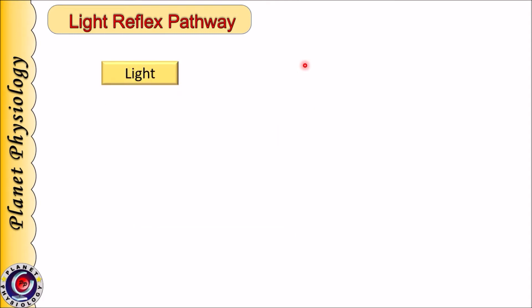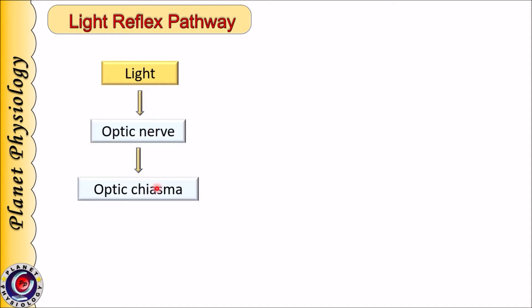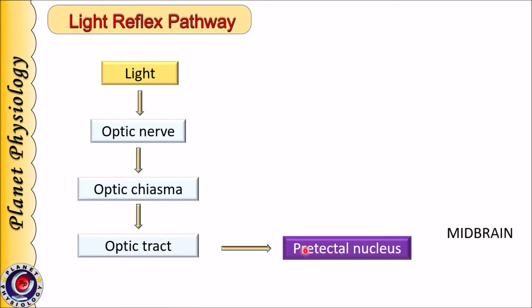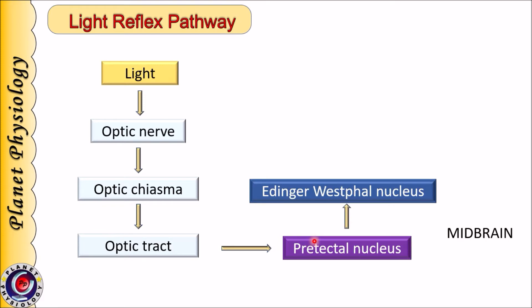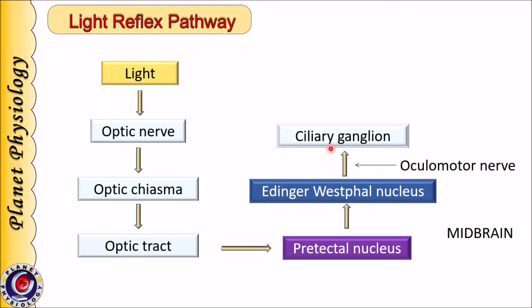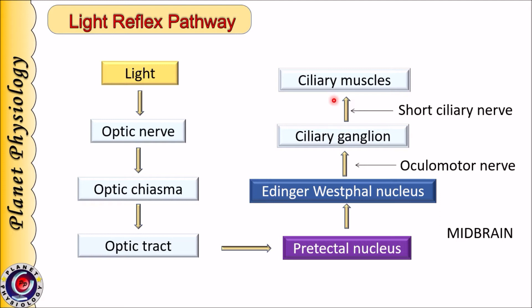Let us revise this pathway for light reflex with the help of a flowchart. Light signals travel in the optic nerve, optic chiasma, optic tract, then to the pre-tectal nucleus in the midbrain. From the pre-tectal nucleus, impulses are given to both ipsilateral as well as contralateral Edinger-Westphal nucleus. From the Edinger-Westphal nucleus, the oculomotor nerve carries signals to the ciliary ganglion, and from there the short ciliary nerve to ciliary muscles, causing constriction of the pupil.